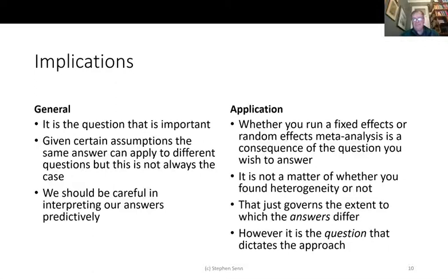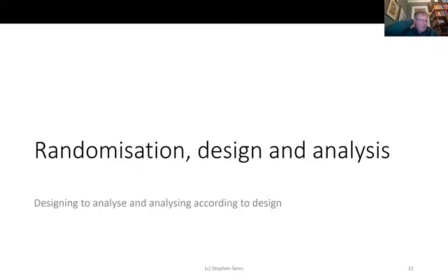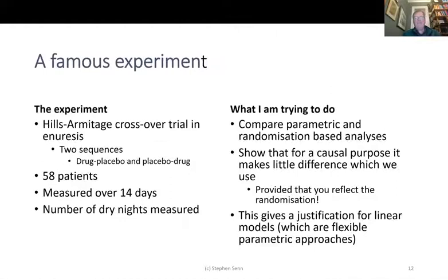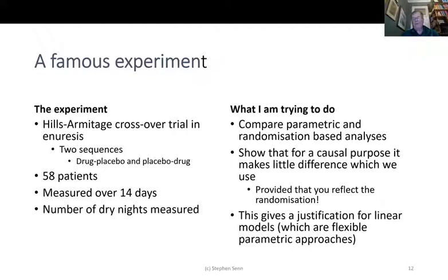How does this relate to randomization, design, and analysis? I'll take a famous experiment reported by Hills and Armitage — two well-known medical statisticians. It's a crossover trial in enuresis, with two sequences: drug-placebo and placebo-drug, 58 patients, measured over 14 days, with number of dry nights as the outcome. I'm going to compare parametric and randomization-based analyses to show that for a causal purpose it makes little difference which we use, provided we reflect the randomization. This gives a justification for linear models as flexible parametric approaches.